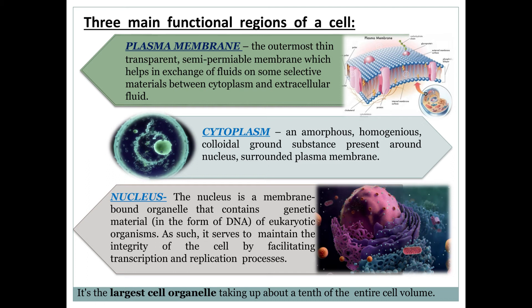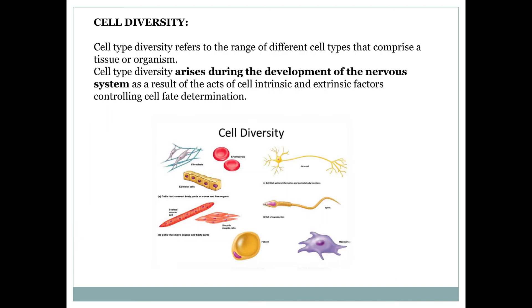The third region is the nucleus, which is a membrane-bound organelle — obviously for eukaryotes, as prokaryotes don't have a nuclear membrane. It contains all the genetic information in the form of DNA, RNA, or other genetic material. It helps in transcription and replication, and also maintains the integrity of the cell.